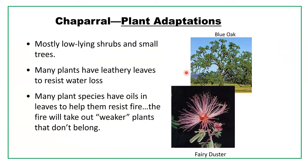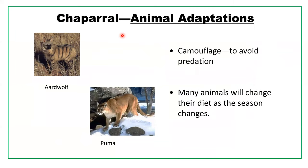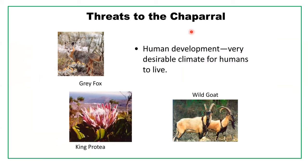Fire can sometimes be very helpful and lead to healthier communities. Animal adaptations in chaparral include camouflage to avoid predation and dietary changes as seasons change. The major threat to chaparral is human development — a very desirable climate for humans means cities and freeways take away habitat for plants and animals, increasing pollution and carbon footprint.